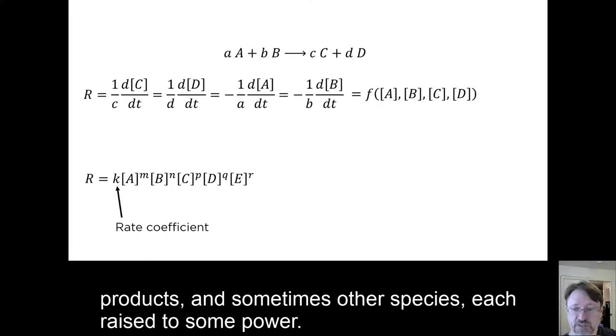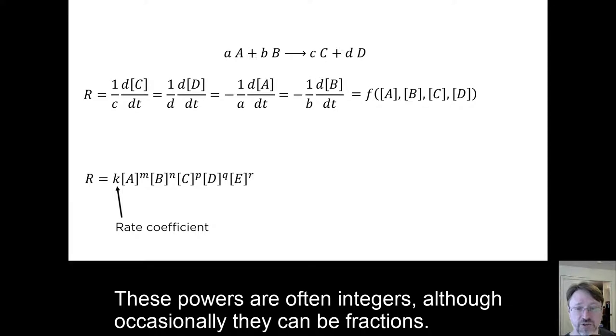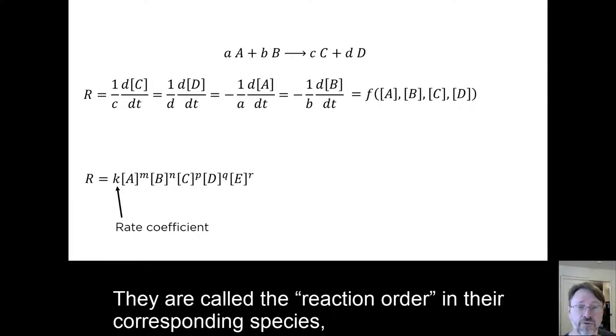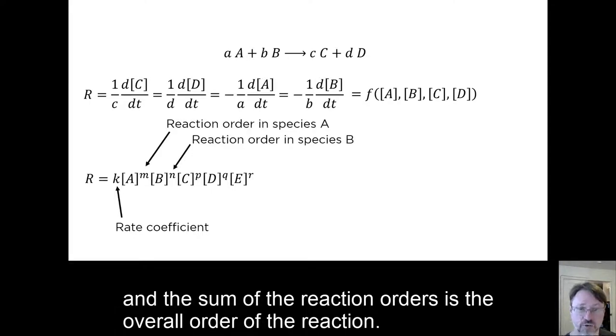products, and sometimes other species, each raised to some power. These powers are often integers, although occasionally they can be fractions. They are called the reaction order in their corresponding species, and the sum of the reaction orders is the overall order of the reaction.